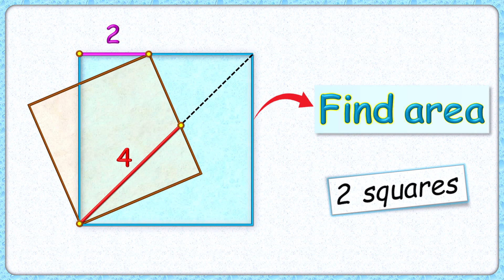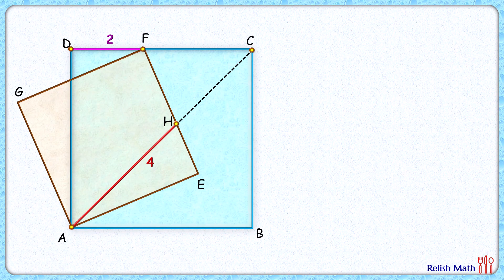This question looks fun to solve. Here, given are two squares such that they are sharing a common vertex along the diagonal. The length of this red line segment is 4 centimeters and the length of this pink line segment is 2 centimeters. The exciting part is, using this limited data, we have to find the area of this blue square.